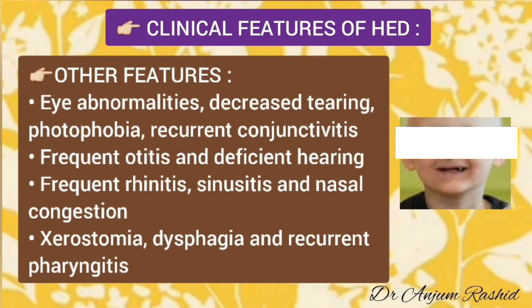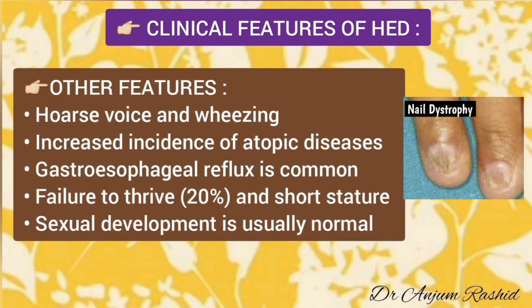Other features of hypohydrotic ectodermal dysplasia include eye abnormalities, decreased hearing, photophobia, and recurrent conjunctivitis. There is frequent otitis and deficient hearing, frequent rhinitis, sinusitis, and nasal congestion. Xerostomia (decreased saliva), dysphagia, and recurrent pharyngitis are also common. Patients have hoarse voice and wheezing due to airway constriction and inflammation. There is increased incidence of atopic disease, gastroesophageal reflux, failure to thrive, and short stature, but sexual development is usually normal.